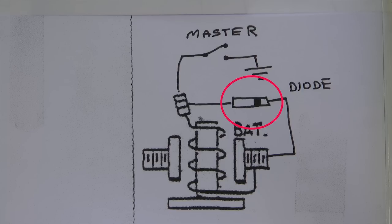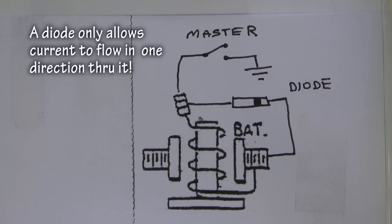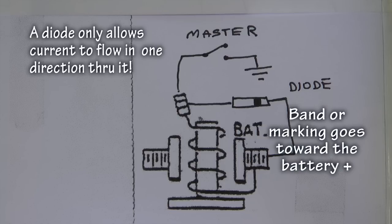A diode has a unique property that allows current to flow only in one direction through it. A diode will always have a band or other markings so you know what direction to hook it up. The band must go towards the battery positive. This is important, or you will blow a circuit.